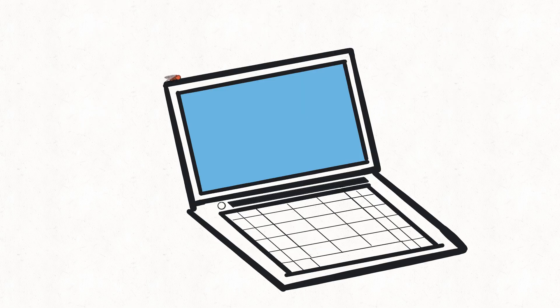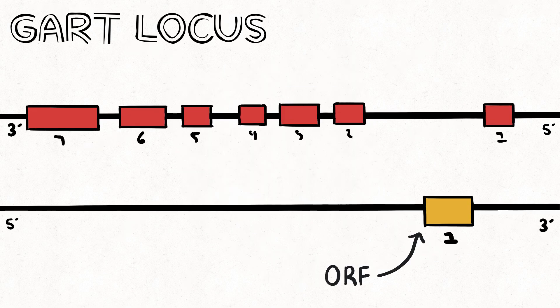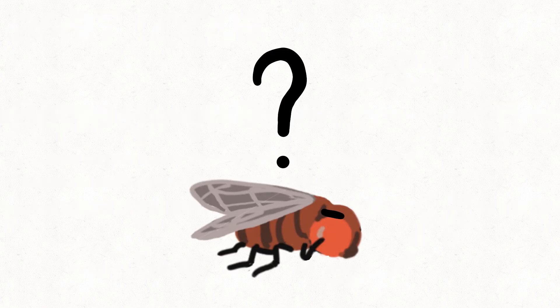Then, by using computer analysis, they were able to reveal something quite bizarre. An open reading frame on the non-coding strand, running in opposite orientation inside the first intron of the GART gene. They had a mystery on their hands.